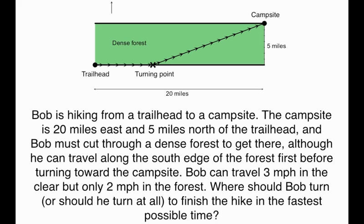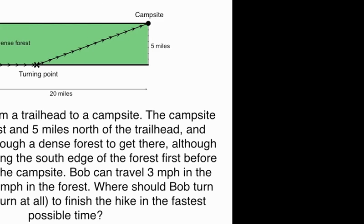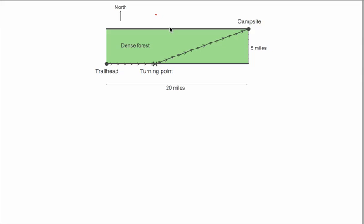One thing to mention before we get into the solution is that in the diagram, the forest continues off to the left and right forever. So the little piece on the edge marked 5 miles is actually going through the forest itself. Let's see how we might work this problem by playing with it and trying a few potential routes, which will give us a better idea of what we're being asked to do.